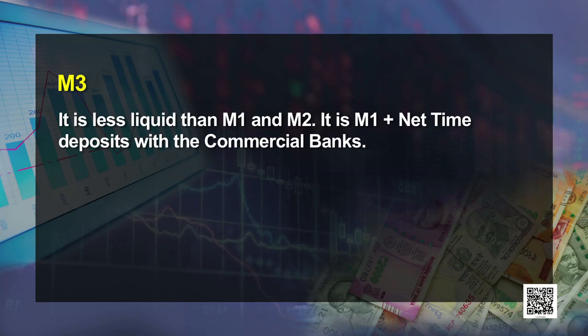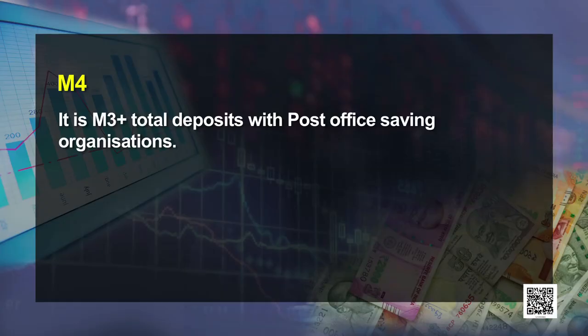M3 is less liquid than M2 and M1. M3 is M1 plus net time deposits with commercial banks. Time deposits means fixed deposits with banks — deposits held for longer periods of time, on which a higher rate of interest is payable, and which are not withdrawable before expiry except for emergencies with some deductions. M3 is also known as broad money. M4 is M3 plus total deposits with post office savings organizations, including both savings accounts and fixed deposit accounts held with post offices.